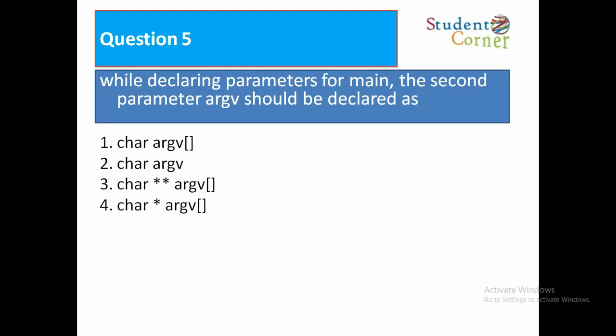While declaring parameters for main, the second parameter ARGV should be declared as the fourth option: char star ARGV of bracket begin bracket close.